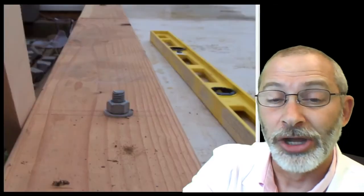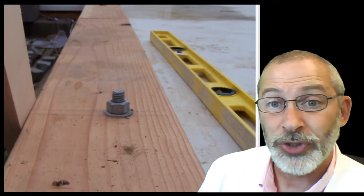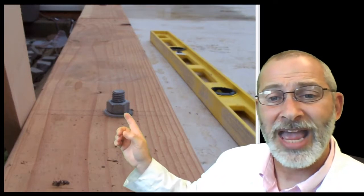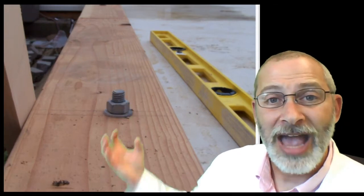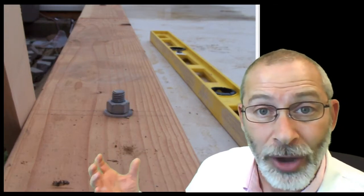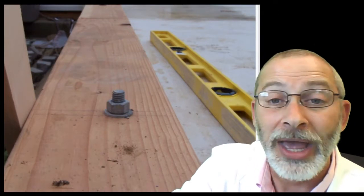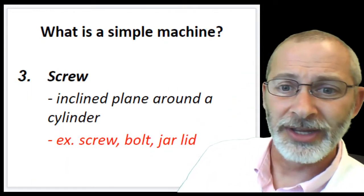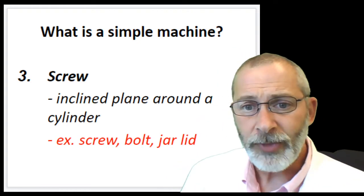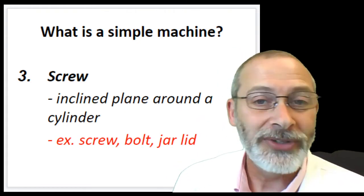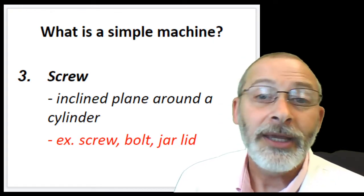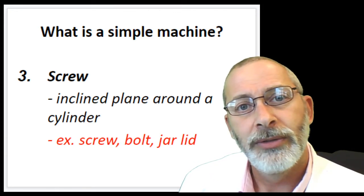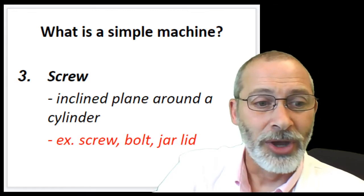Here's a picture. Can you pick out the screw? You can see this anchor bolt. This anchor bolt is a screw that is actually holding my house down on the foundation, keeping it from blowing away in strong winds. Here are some examples of other screws: a screw, obviously; a bolt, as I showed you; a jar lid. Let's see if you can think of any other examples of screws. So let's move on — I already showed you the picture of the bolt.